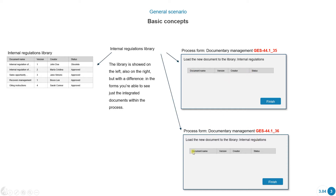Here we can see there's another process — a different process. It's of the same class of process but it's a different instance. We're also using the same library field. So this library field that we're seeing here is going to display all the documents that are uploaded into the library. But if we access the library from a process, we're only going to see those documents that were attached in that process.